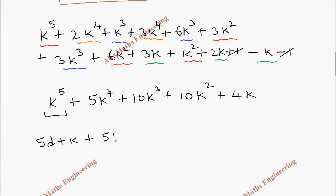That is plus 5k^4 plus 10k^3 plus 10k^2 plus 4k. You can add these two like terms: 4k and k gives 5k.